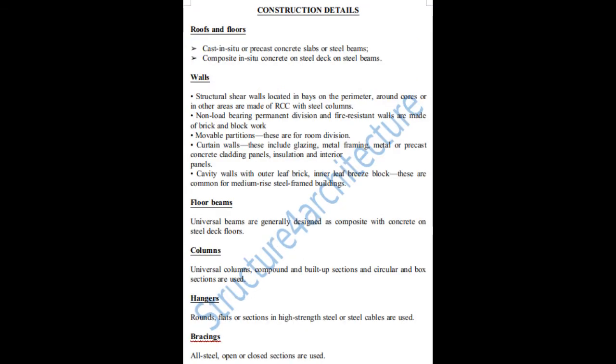Regarding construction details — Number 1: roofs and floors. Cast-in-situ or precast concrete slabs or steel beams are used. Composite in-situ concrete on steel deck on steel beams is also used. For walls, structural shear walls located in bays on the perimeter, around cores, or in other areas are made of RCC with steel columns. Non-load bearing permanent division and fire-resisting walls are made of brick and block work. Movable partitions are used for room division.